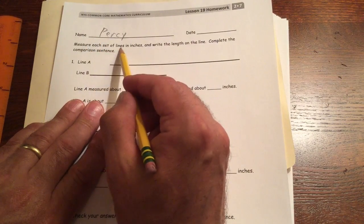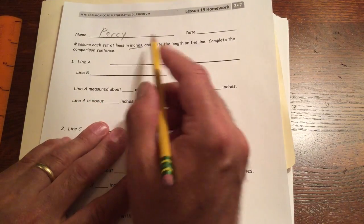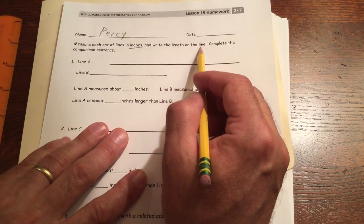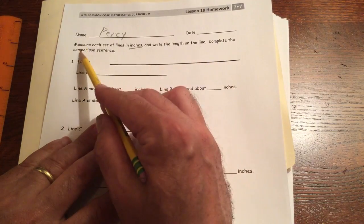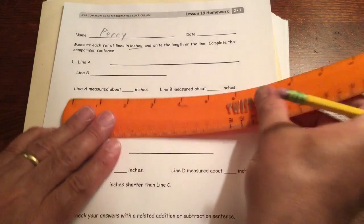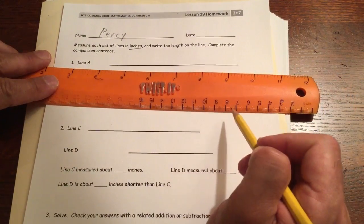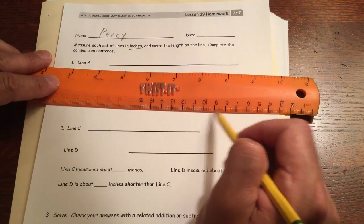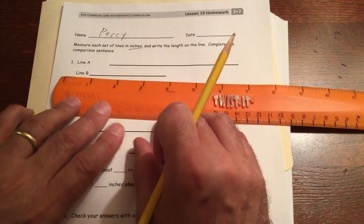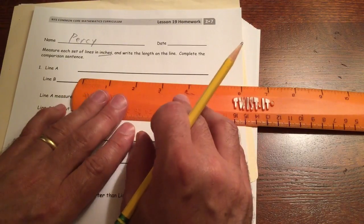Measure each set of lines in inches and write the length on the line. Complete the comparison sentence. So we're measuring in inches. I'm going to use an inch ruler. Be careful you don't use the centimeter side. Those are the smaller lines. The lines are a lot closer together. You won't get the same measurement if you use the wrong unit.